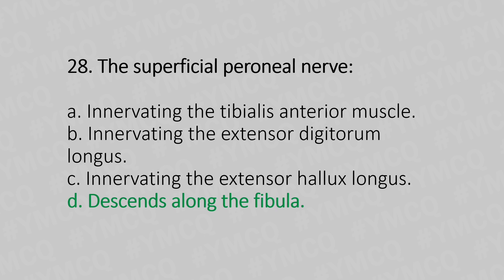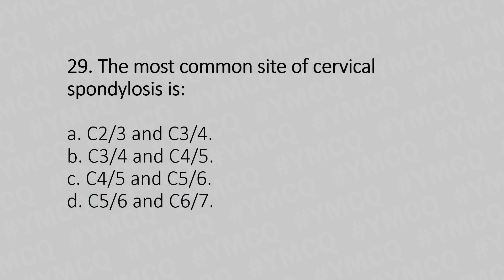Now let's move to question number 29. The most common site of cervical spondylosis is: Option A, C2-C3 and C3-C4. Option B, C3-C4 and C4-C5. Option C, C4-C5 and C5-C6. Option D, C5-C6 and C6-C7. And the answer is Option D, C5-C6 and C6-C7.